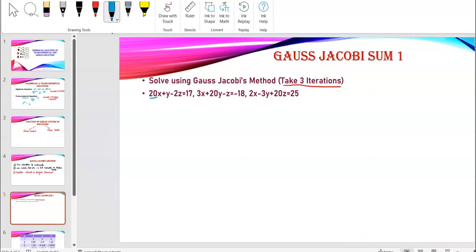So, my first equation is diagonal dominant in x means the value of x is the largest. From the first equation, I'll write that x is equal to 17 minus y plus 2z divided by 20. From the second equation where 20 is again the largest value of the entire equation, I'll write y is negative 18 minus 3x plus z divided by 20. And the last equation z is equal to, because again 20 is the largest and attached to z, 25 minus 2x plus 3y divided by 20.